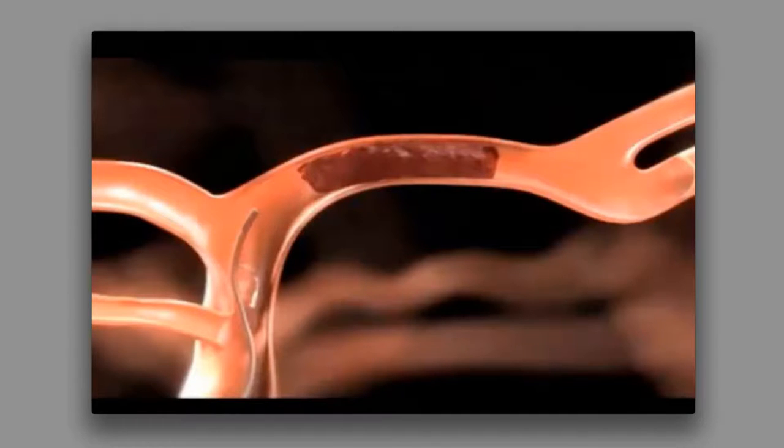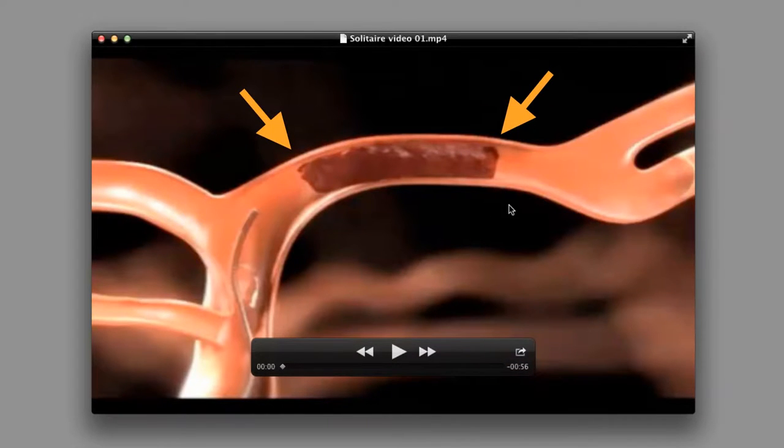In this video, we're going to look at how endovascular stroke treatment works. In the most common type of stroke, called an ischemic stroke, a blood clot has blocked an artery inside the brain.